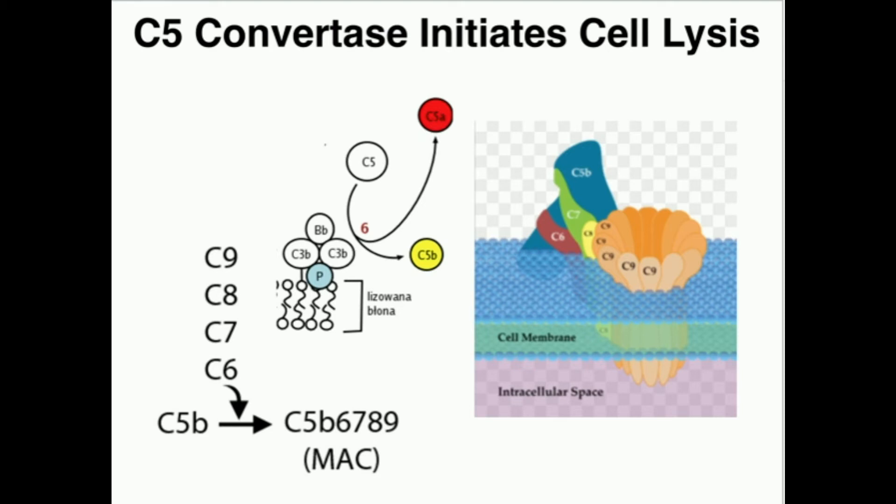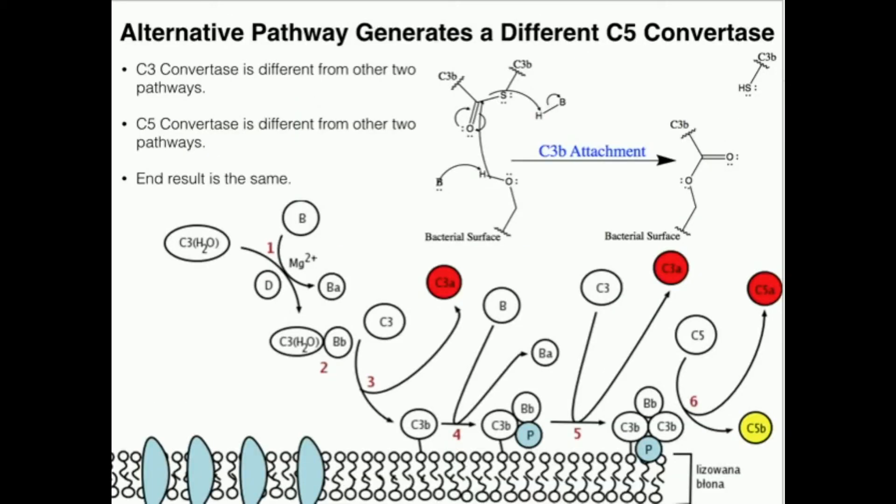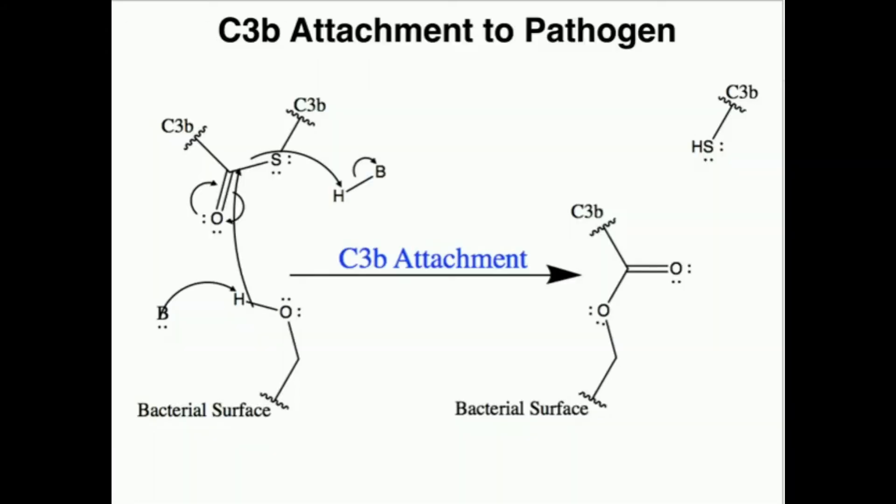Because things can freely move out and things out here can move in, the pathogen can no longer regulate its internal environment. And so it dies. It bursts, it undergoes cell lysis, and the pathogen is eliminated. So just like the classical pathway and the lectin pathway, the alternative pathway also forms a membrane attack complex to kill the cell. It's just that in the alternative pathways, you can see the players are a little bit different. We have a B protein, a hydrolyzed C3, we have a D, we have a properdin. Very different situation.